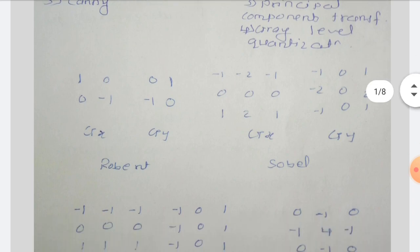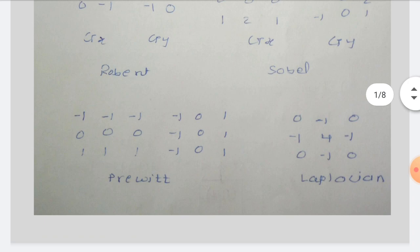Some conventional edge detectors are given here. For micro edges, the Robert operator has Gx as [1,0; 0,-1] and Gy as [0,1; -1,0]. For the Sobel operator, a 3x3 mask is used: Gx is [-1,-2,-1; 0,0,0; 1,2,1] and Gy is [-1,0,1; -2,0,2; -1,0,1]. For the Prewitt operator, Gx is [-1,-1,-1; 0,0,0; 1,1,1] and Gy for the vertical edge mask is [-1,0,1; -1,0,1; -1,0,1].